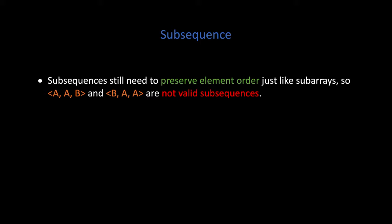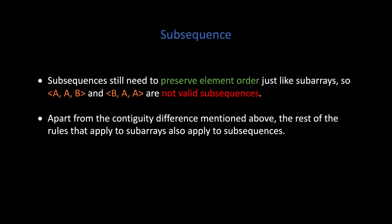So, AAB and BAA are not valid subsequences. Apart from the contiguity difference mentioned above, the rest of the rules that apply to subarrays also apply to subsequences.